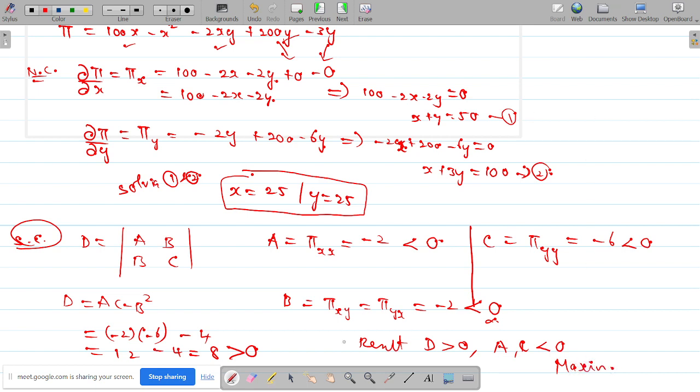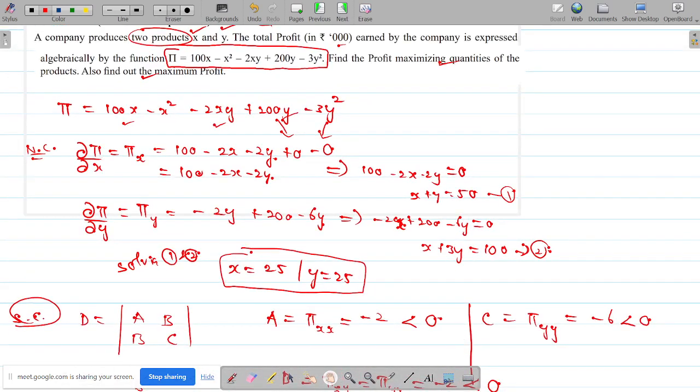Maximization function at this point. Maximum profit. So substitute X and Y value as 25. It is 100 into 25 minus 25² minus 2 into 25 into 25 plus 200 into 25 minus 3 into 25². I am getting the last value to be 3750 in thousands. Triple 0 can be added. This is about illustration 3.